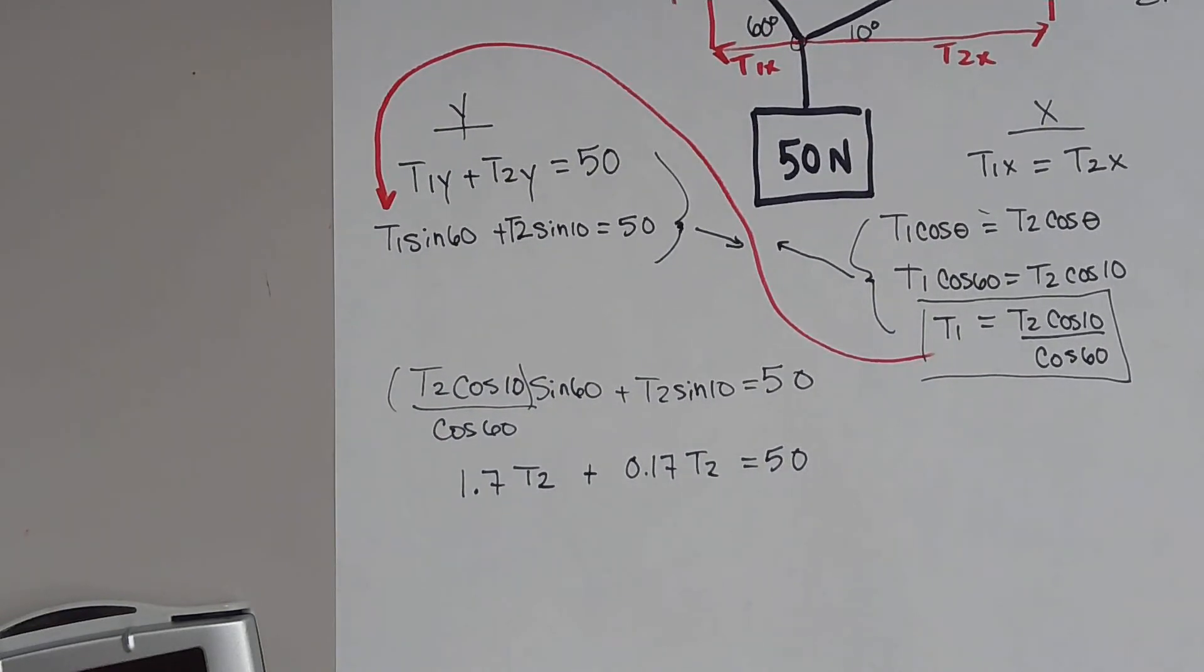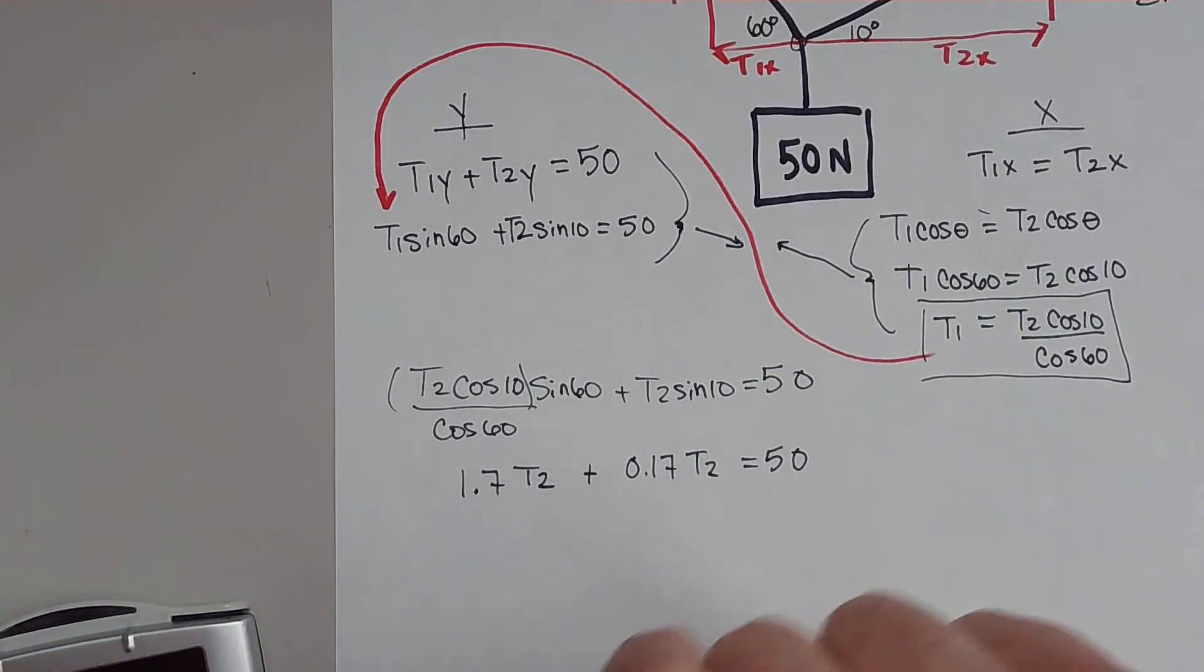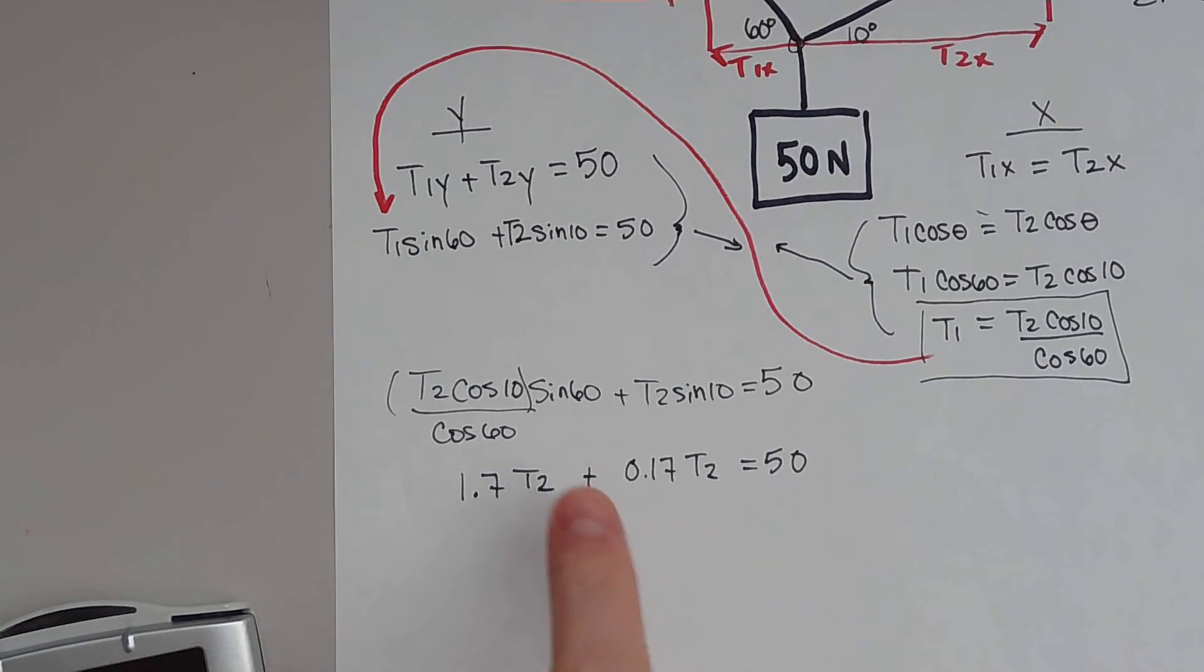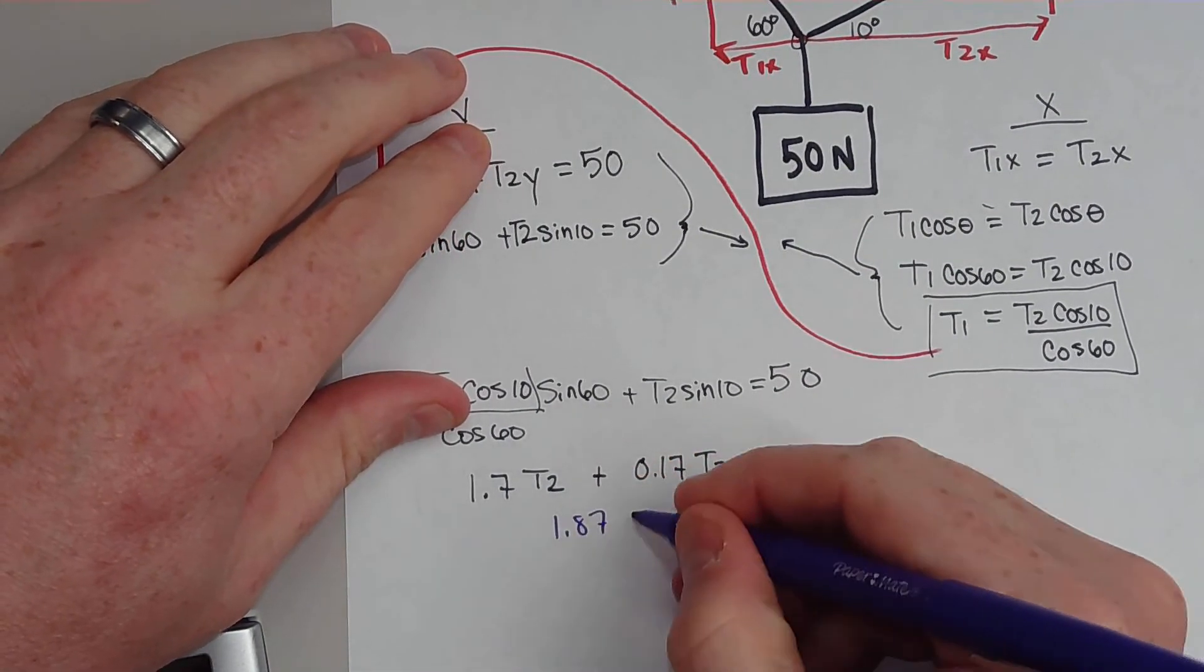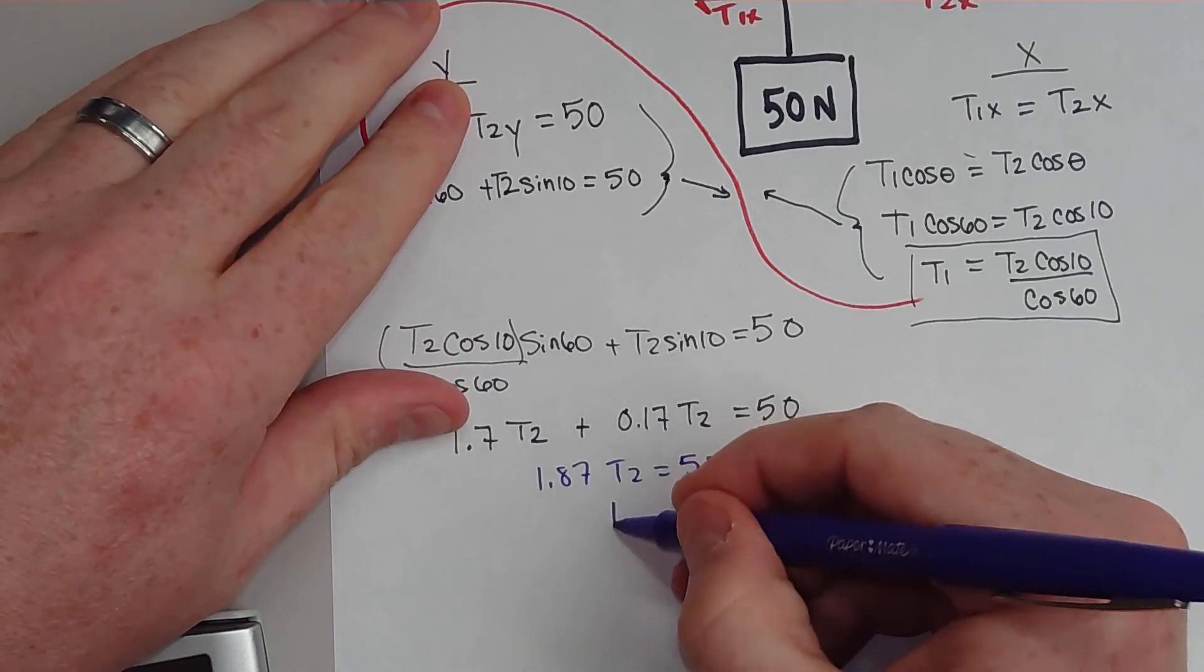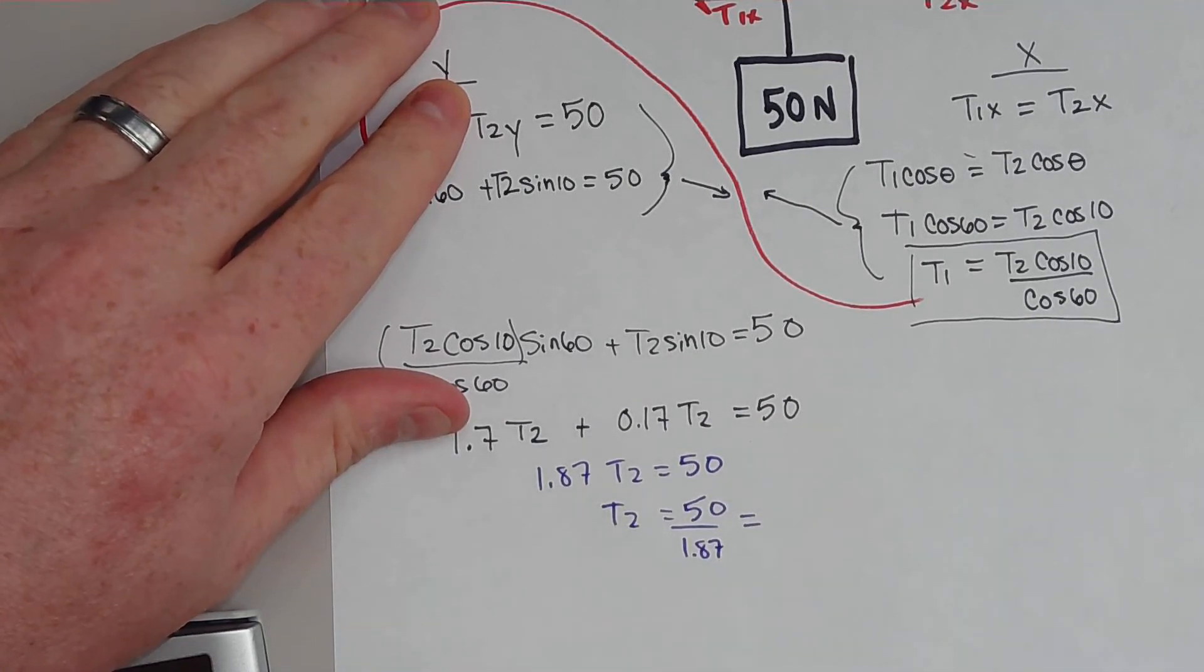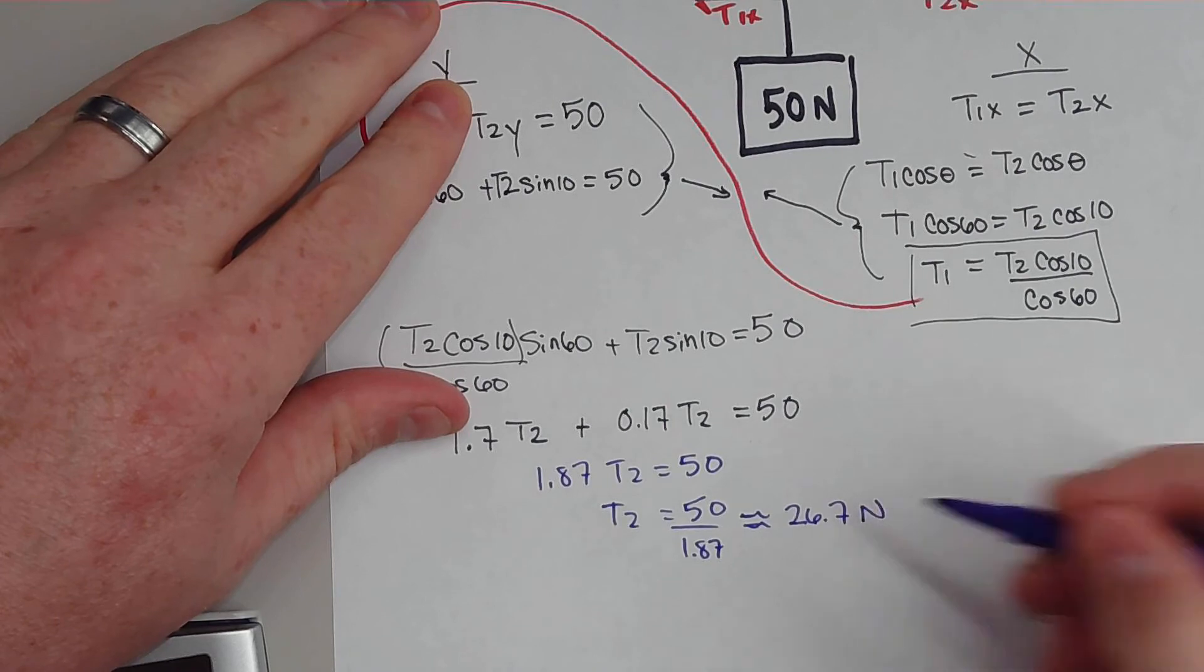Now, the reason I do this is it makes it a lot easier. So you notice here we have 1.7 T2 plus 0.17 T2. We can actually combine these two terms. So 1.7 plus 0.17 equals about 1.87 T2. And then we can just simply solve it. T2 would be equal to 50 divided by 1.87, and I get approximately 26.7 newtons.